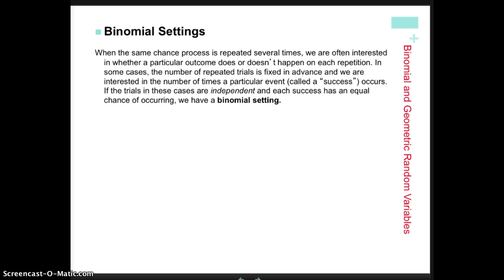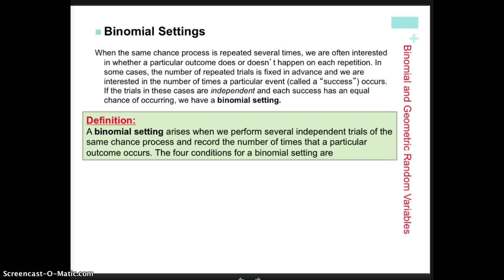Pause the video now so you can read about what a binomial setting is. As you can see from the definition, we have some specific requirements. There has to be a way that we can define both success or failure. For example, if I'm rolling a fair die and I define success as getting a 4, the probability of success is 1/6, and failure is 1 minus 1/6, or 5/6, meaning getting anything other than a 4.